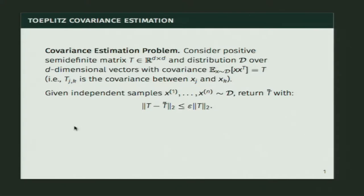We're going to get independent samples from this distribution, and then we want to return an approximation to T, which we'll call T-tilde, such that there's small distance between them. We'll look at distance in the spectral norm: the spectral norm between T and T-tilde should be less than epsilon times the spectral norm of T, where epsilon is an error parameter we'll set. The sample complexity will depend on epsilon.